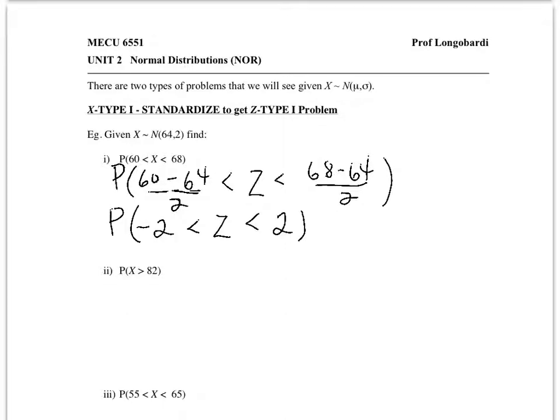When we do this, the X gets converted into a Z-score. And now what we really want is the probability of the standard normal being between negative 2 and 2.